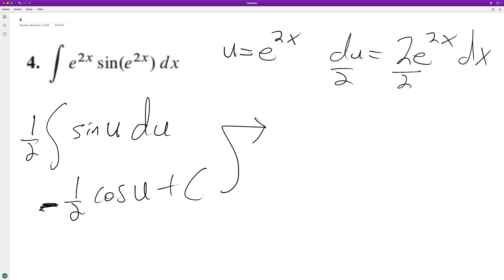So we end up with negative 1 half cosine, and then our u value there, so e raised to the 2x plus c. That's it.